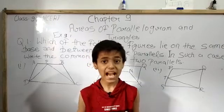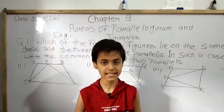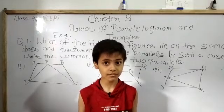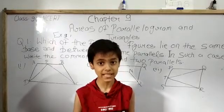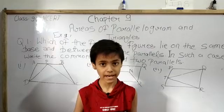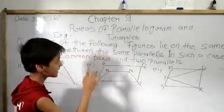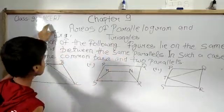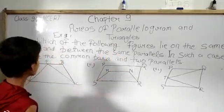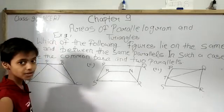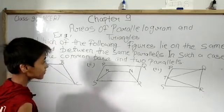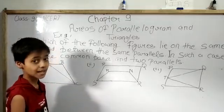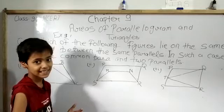Hello students, I am Sarim Khan. Someone had requested me for solving all the questions from Chapter 9 of 9th class NCERT Mathematics. Today I brought for you Chapter 9, that is Area of Parallelograms and Triangles. In this video I am going to solve question number one from Exercise 9.1. There are six questions and I will solve only three questions in this video, and in the next video we will try to solve the next three questions.